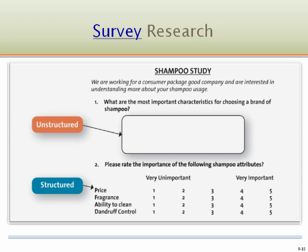A survey is a systematic means of collecting information from people that generally uses a questionnaire. Individual questions on a questionnaire can be either unstructured and open-ended, or structured and close-ended with a discrete set of response alternatives.